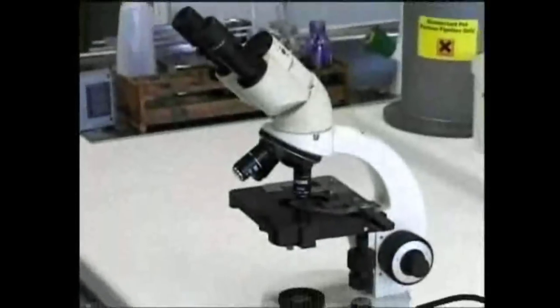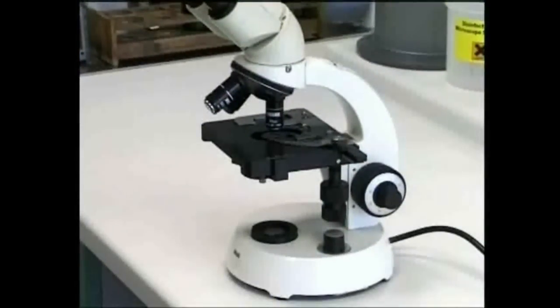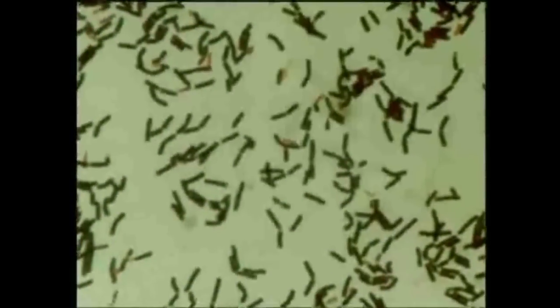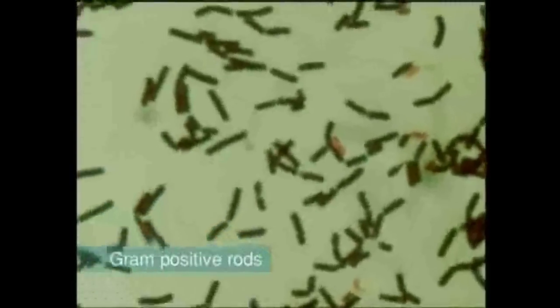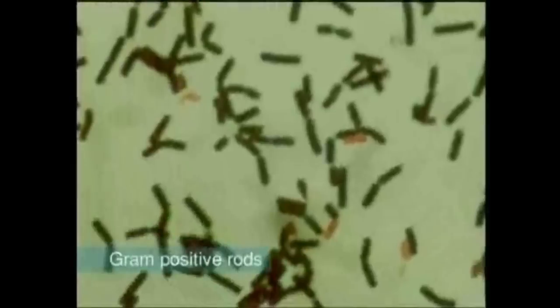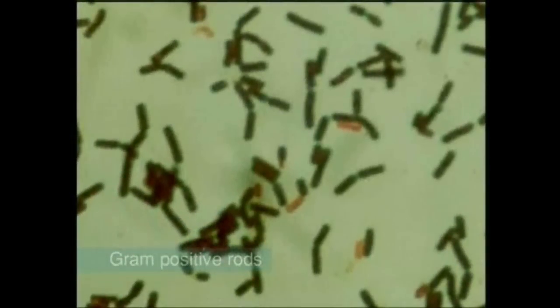If you want to look at individual bacterial cells rather than the growth of cultures, you'll need to use a microscope. The gram stain is the most important stain in bacteriology. It divides bacteria into two groups, called gram positive and gram negative, and provides an important initial identification step.